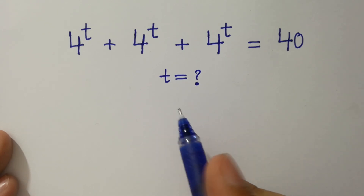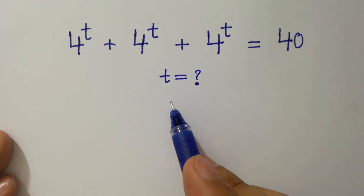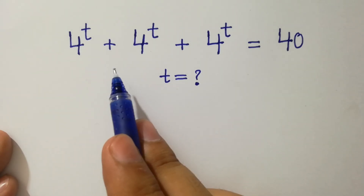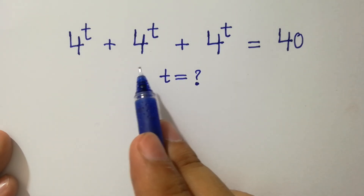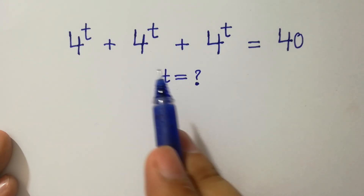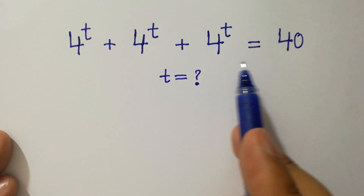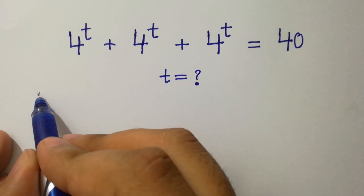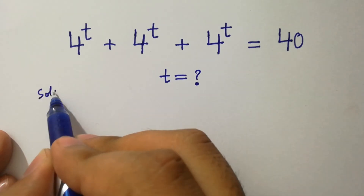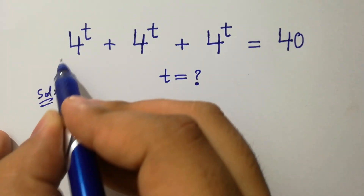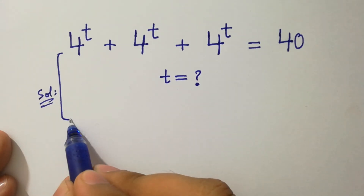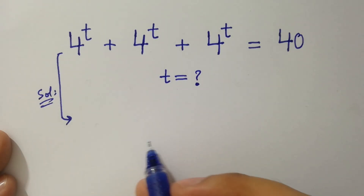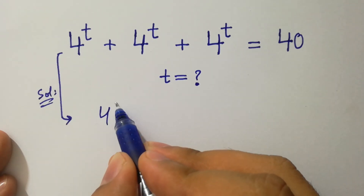Hello friends, find the value of t if 4 to the power t plus 4 to the power t plus 4 to the power t equals 40. Let's have a solution.